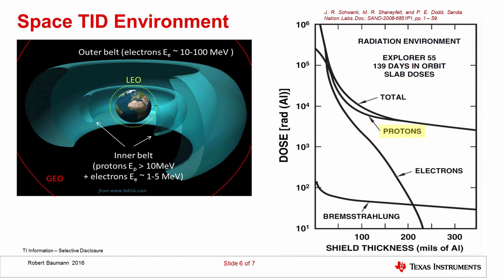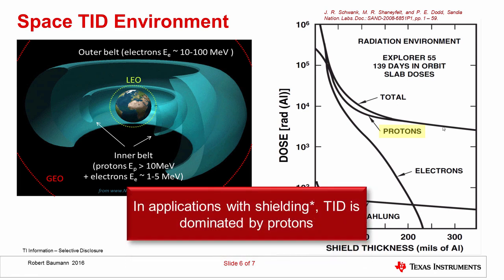Most satellites are shielded in some way — the electronics are not on the outside of the satellite, but typically in a metal box for electrical shielding as well as radiation shielding. That metal box is typically made of aluminum, and very typically somewhere between 200 to 300 mils of aluminum is used. In a shielded system, protons will typically dominate — they're the dominant form of dose you'll see. Only in unshielded systems do electrons really become the dominant feature. Since most satellite electronics are shielded, protons are our primary concern from a total dose perspective.